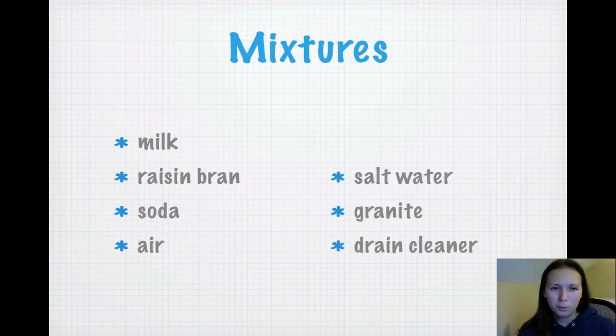And finally, these are mixtures: milk, raisin bran, soda, air, salt water, granite, and drain cleaner. All of these, you can actually use physical means to separate them very easily. Like salt water, you would evaporate the water and get the salt back. Milk, if you shake it, you can get butter fat out of milk. Raisin bran, obviously you could just pick out the raisins from the bran. So guys, just be thinking about these as we continue on. I want you to get these answers right on the test for your resubmit this week.